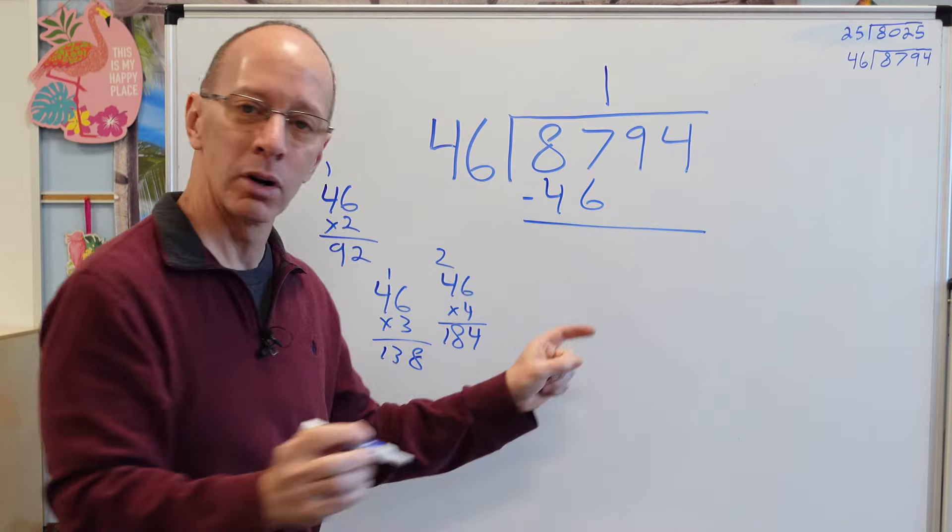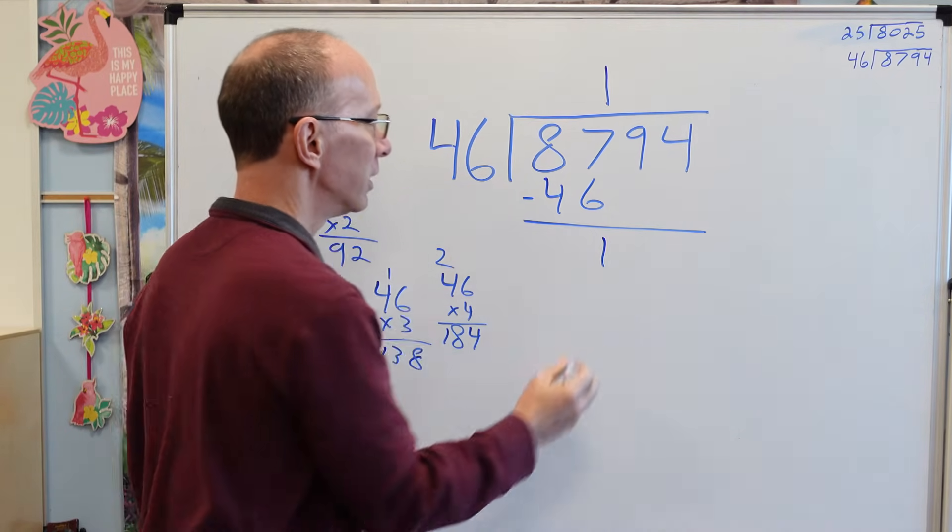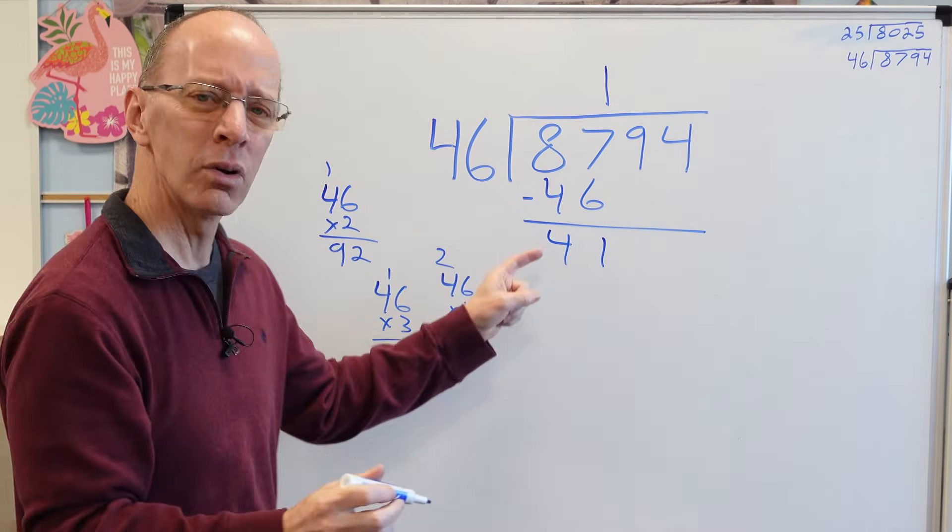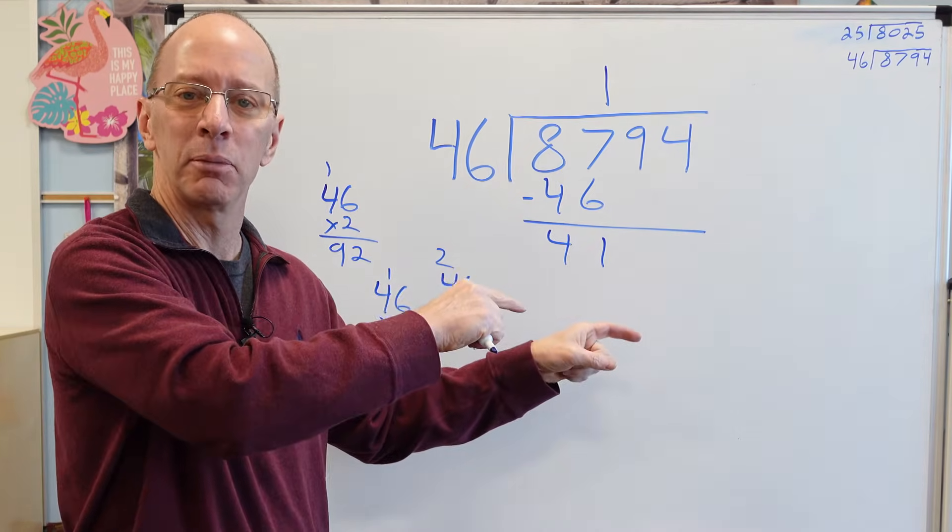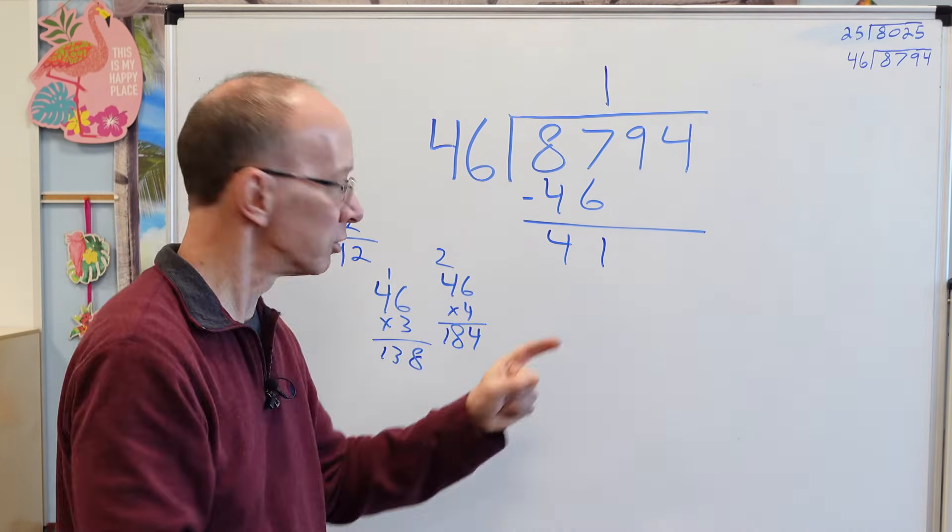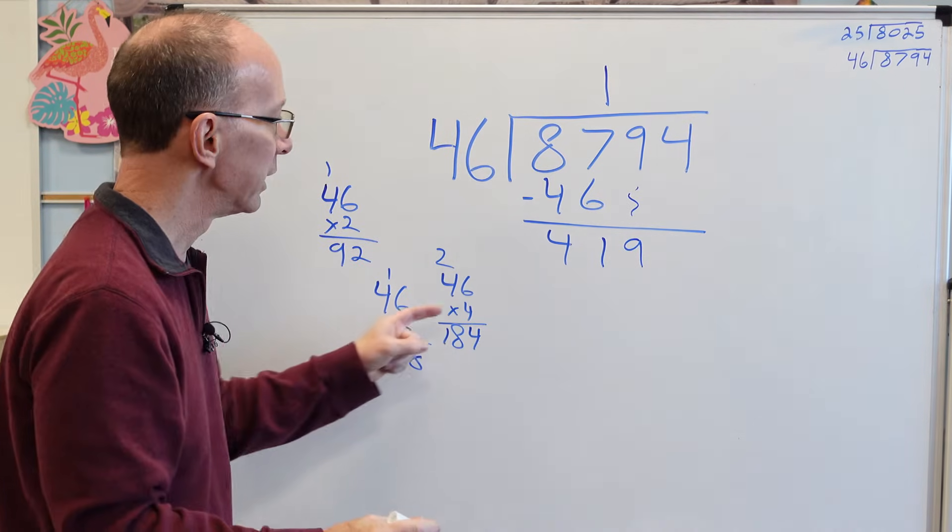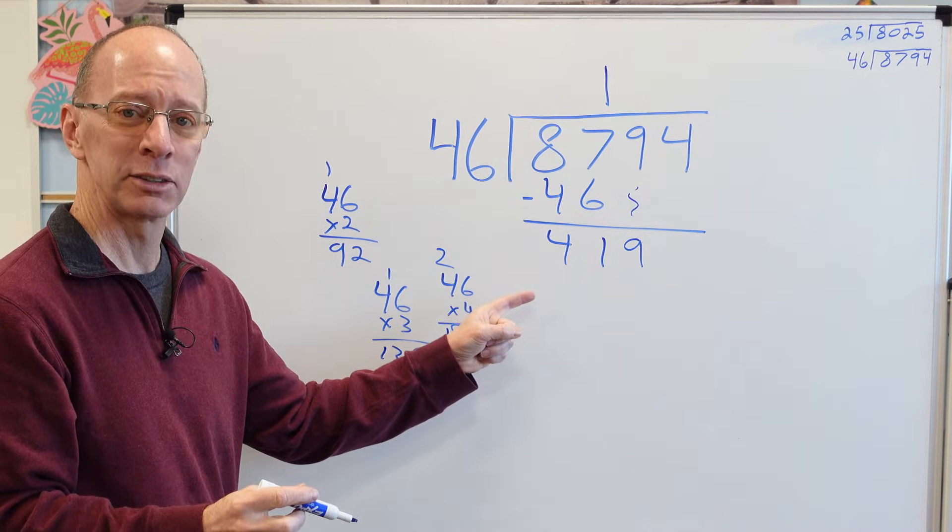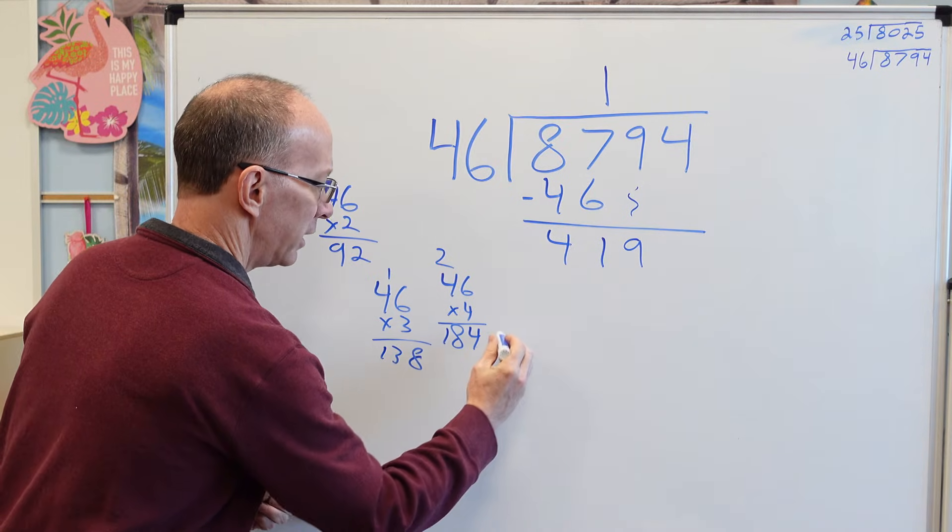Need to put that right above that number. 1 times 46 is 46. Subtract. Now, don't worry. Don't worry about the answer right here. 7 minus 6 is 1. 8 minus 4 is 4. All right. Don't worry that this is a big number here. Go to the next step. Drop the next number down. Drop it down. Drop it down. 9 right there. Now, do I have anything that's close to that? No. That's pretty big right there.